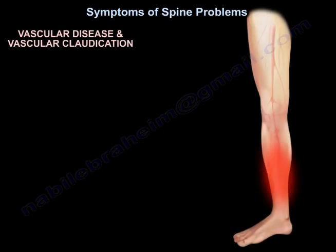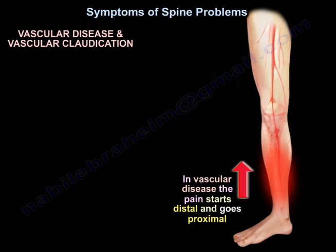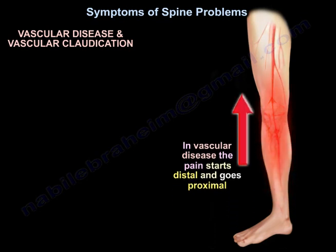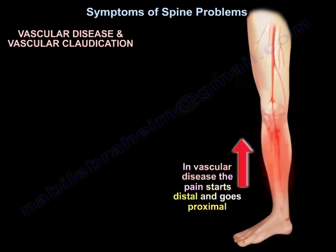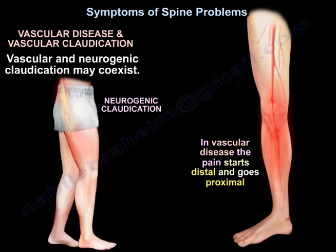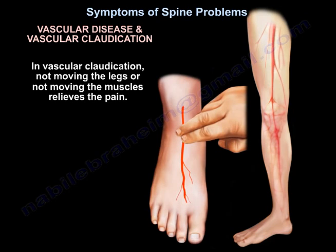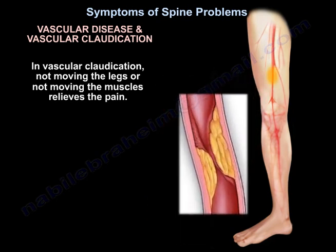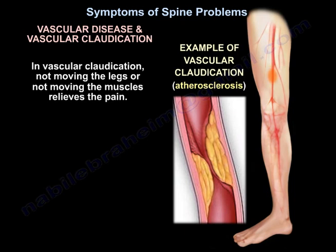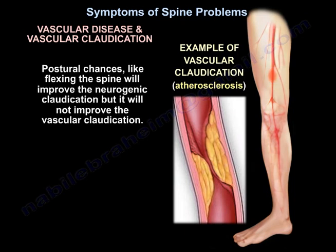In vascular disease and vascular claudication, the pain will start distally because there is not enough blood flow distally, and it progresses proximally since circulation is poorest distally. Vascular and neurogenic claudication may coexist. In vascular claudication, not moving the legs or muscles relieves the pain. Postural changes like flexing the spine will improve neurogenic claudication but will not improve vascular claudication.